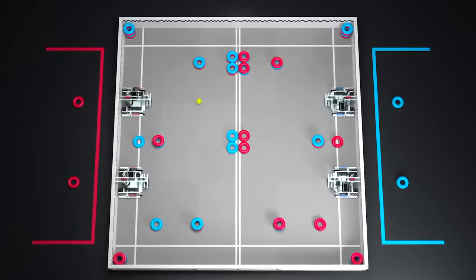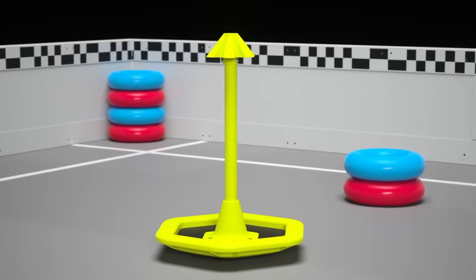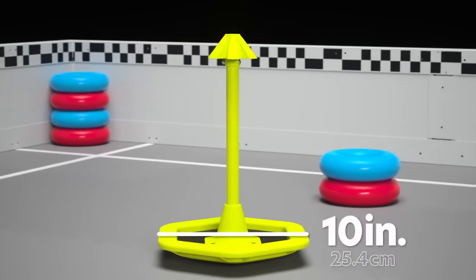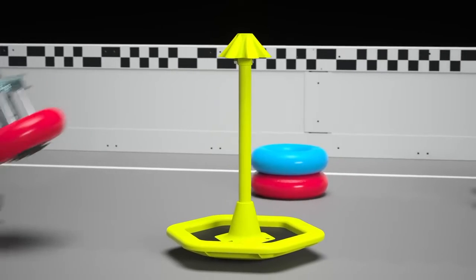There are also five hexagonal mobile goals that can be used by either alliance. Mobile goals have a maximum diameter of 10 inches and an overall height of 14.5 inches.